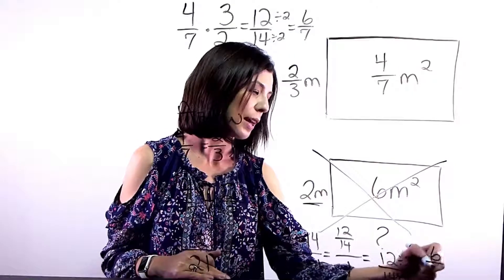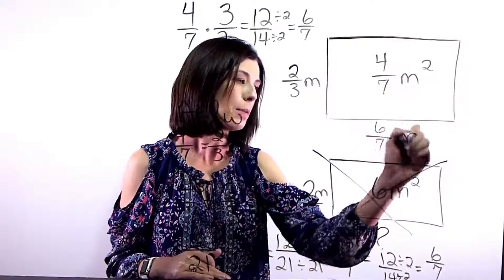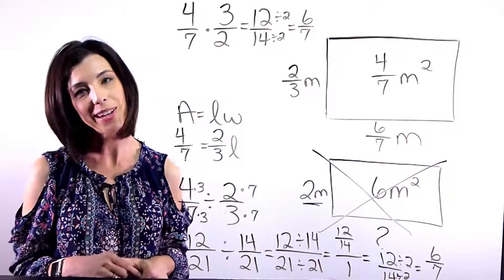So my length for my fishpond needs to be six sevenths meters long. I hope you found this video helpful.